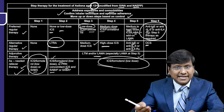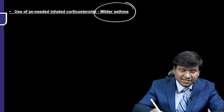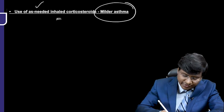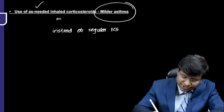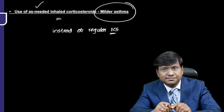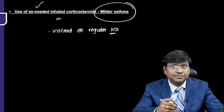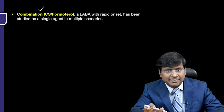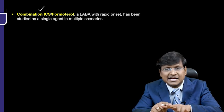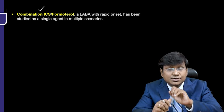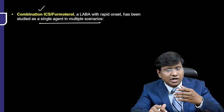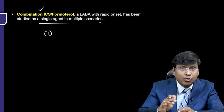Dissecting stepwise treatment further: in milder asthma, evidence supports use of as-needed inhaled corticosteroids instead of regular inhaled corticosteroids. The combination of inhaled corticosteroids plus formoterol — a long-acting beta agonist with rapid onset of action — has been studied as a single maintenance-and-reliever agent in multiple scenarios, including patients with more severe asthma.